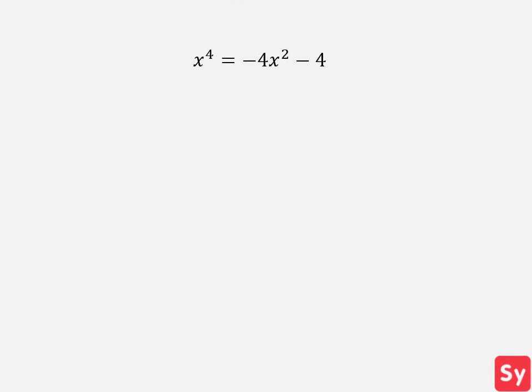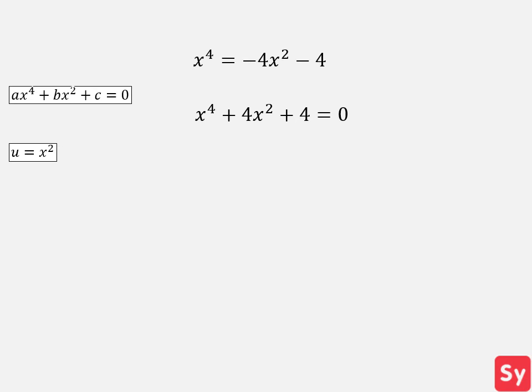Last example: we have x to the fourth equals negative 4x squared minus 4. We see that this is a bi-quadratic equation from the powers of x, but it's not written in standard form. This will make it a little tricky to solve, so we'll rewrite it in the standard bi-quadratic form. We add 4x squared and 4 to each side, and now we can set u equal to x squared and u squared equal to x to the fourth. We rewrite the equation in terms of u and get u squared plus 4u plus 4 equals zero.